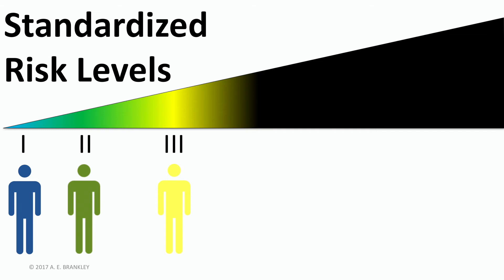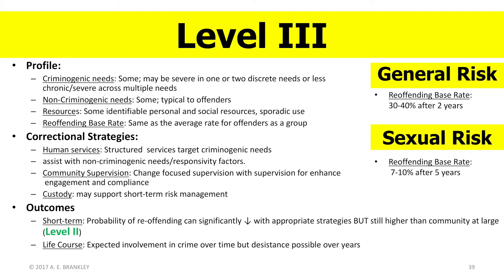Level 3 is another meaningful step up the risk dimension. This risk level is the largest in terms of number of individuals. It also represents the average or middle of the risk dimension. Individuals in this risk level have the same level of risk as the overall average of the correctional population. For general risk, that's around 30–40% after two years. And for sexual risk, that's around 7–10% after five years. Individuals will have more than one problem and require more structured programs. Custody is appropriate to manage short-term issues in risk or get treatment started. After successfully completing treatment, some individuals will move down to level 2, and some even may, after time free in the community, move down to level 1 — but that would not happen over the short term.